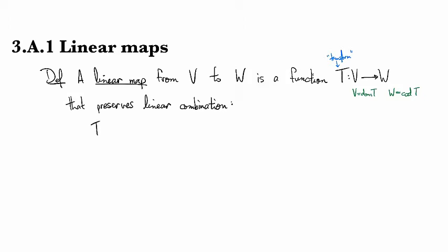In other words, if I take T of a linear combination, A times U plus B times V, where U and V are vectors and A and B are scalars, then this is the same thing as the scalar multiple of TU plus the scalar multiple of TV. It's a common convention to drop the parentheses when you're dealing with linear maps.